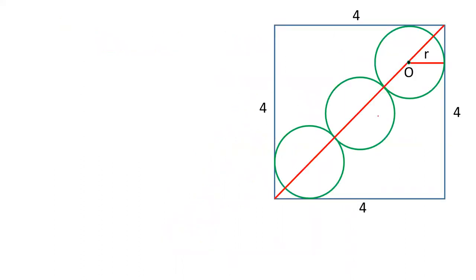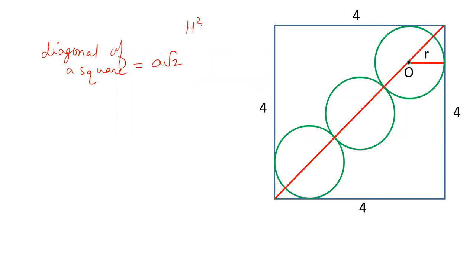Friends, the diagonal of a square is always equal to a root 2, where a is the side of the square. The reason is Pythagoras theorem: perpendicular squared plus base squared. So we can say that h squared is equal to 4 squared plus 4 squared, that is 16 plus 16 equals 32. The square root of 32 is 4 root 2. So we can directly say that a root 2 is 4 root 2, meaning this diagonal is 4 root 2.